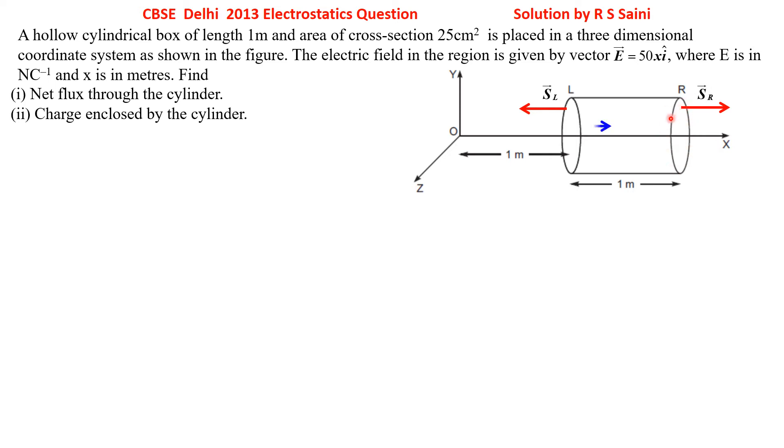And electric field as is given in the question, electric field is along positive x-axis i-cap. It is along positive x-axis here and it is along positive x-axis here too. But as x keeps on increasing, strength of electric field would keep on increasing. That means this electric field E left is lesser as x-coordinate is smaller, whereas E on the right-hand side would be larger.